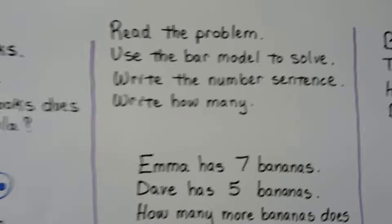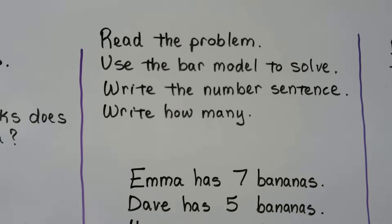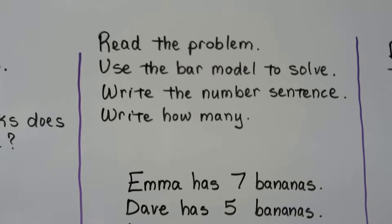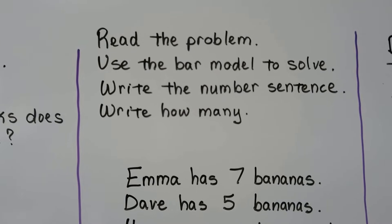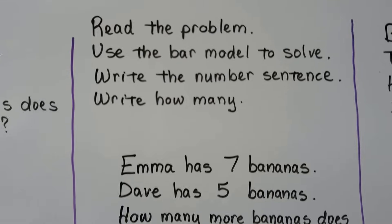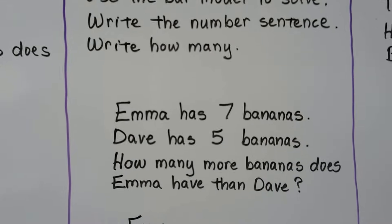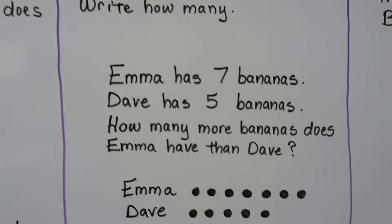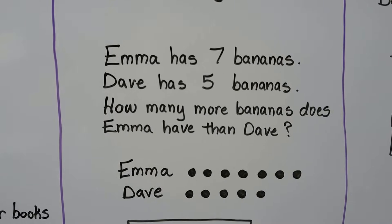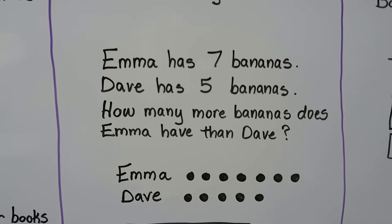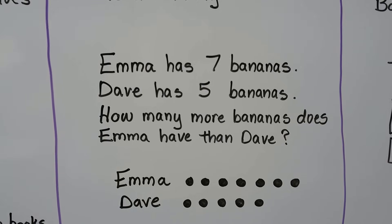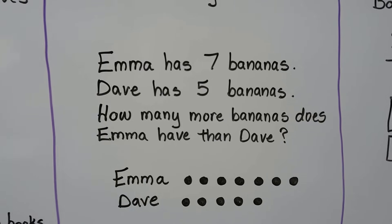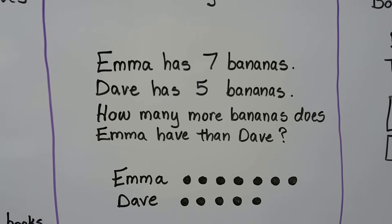Read the problem. Use the bar model to solve. Write the number sentence. Write how many. Emma has seven bananas. Dave has five bananas. How many more bananas does Emma have than Dave?